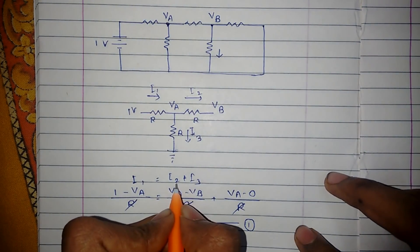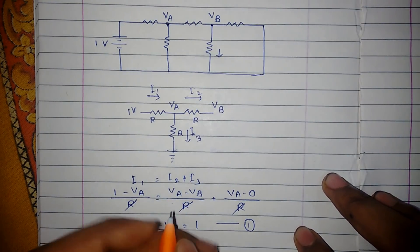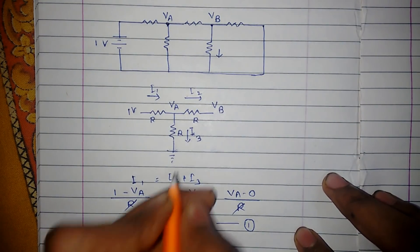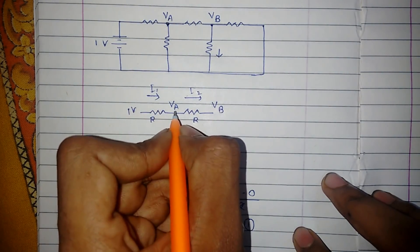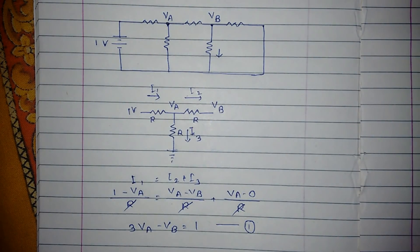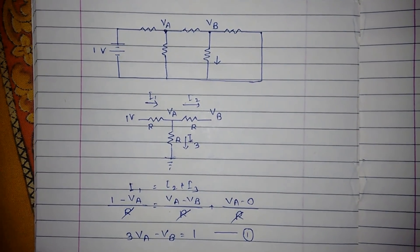And here it would be minus I2 plus I3, but minus I2 is equal to VA minus VB because direction is opposite. So potential difference would be VB minus VA, so negative negative becomes plus, and our equation remains the same. Now we will go for KCL.